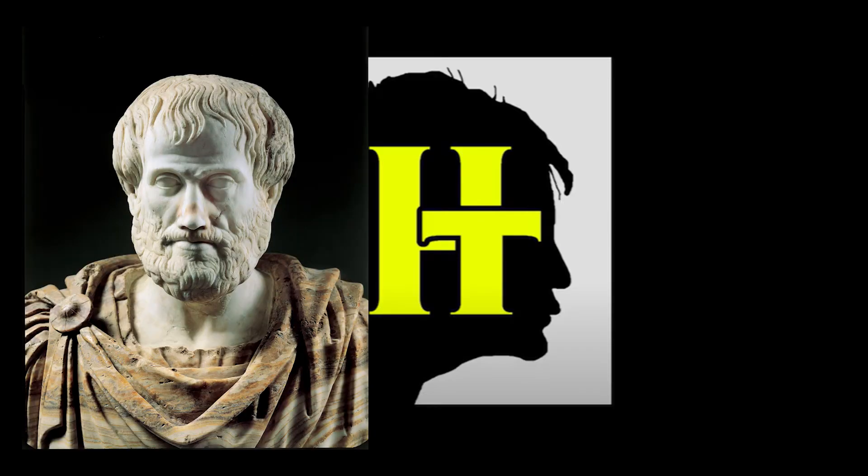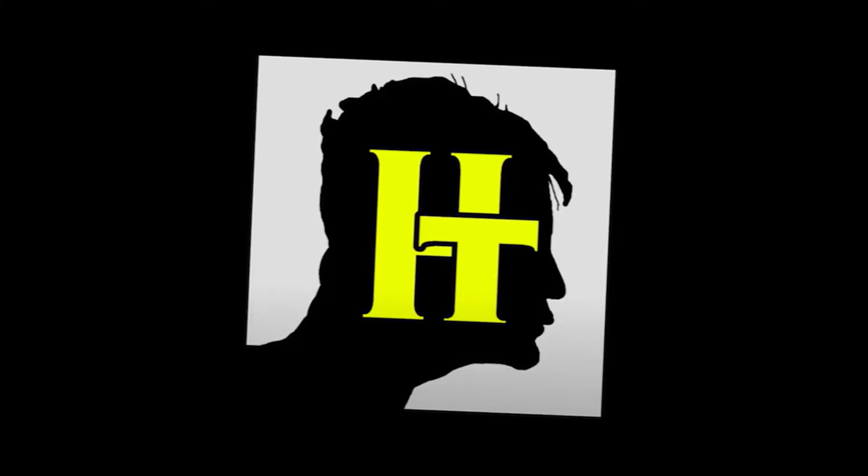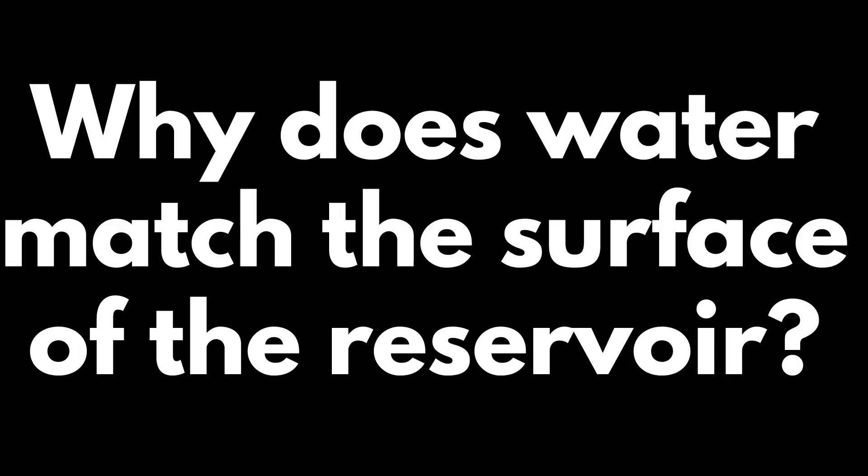What actually happens is that the water at the right surface always matches the surface height of the left-hand side. There's an old saying by Aristotle regarding water flow, water seeks its own level. This is supported by Boyle's self-flowing flask and our siphon demonstration. But why exactly does this even happen? Why does water match the surface of the reservoir?